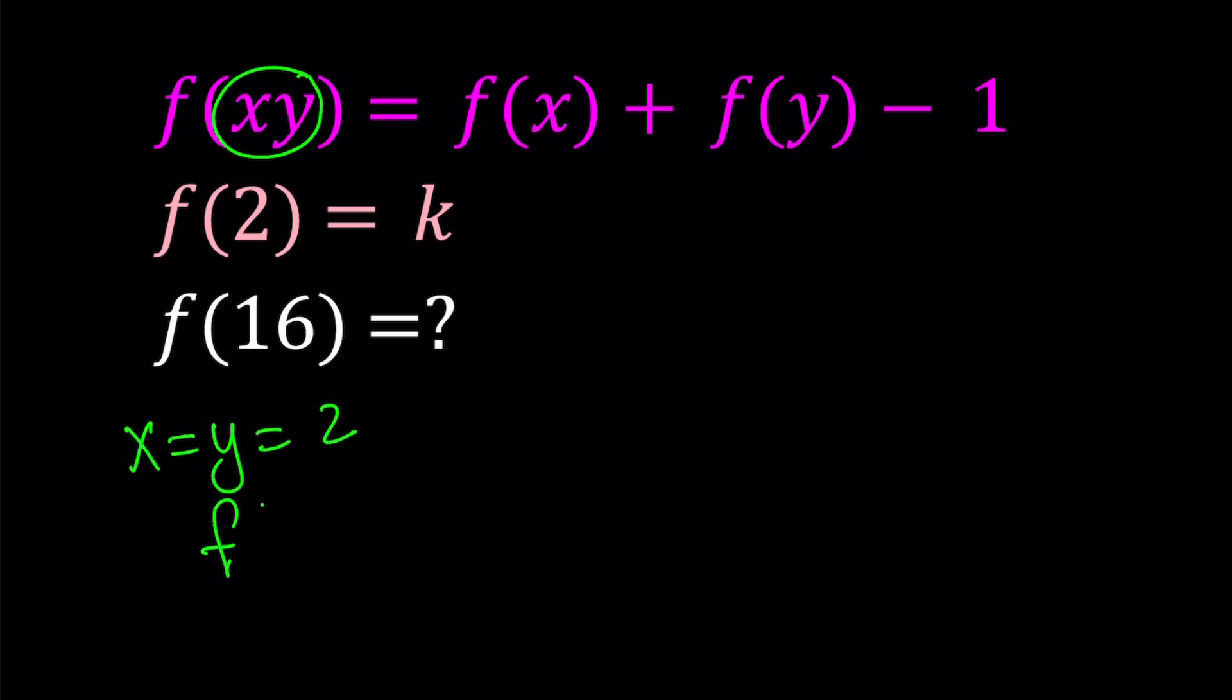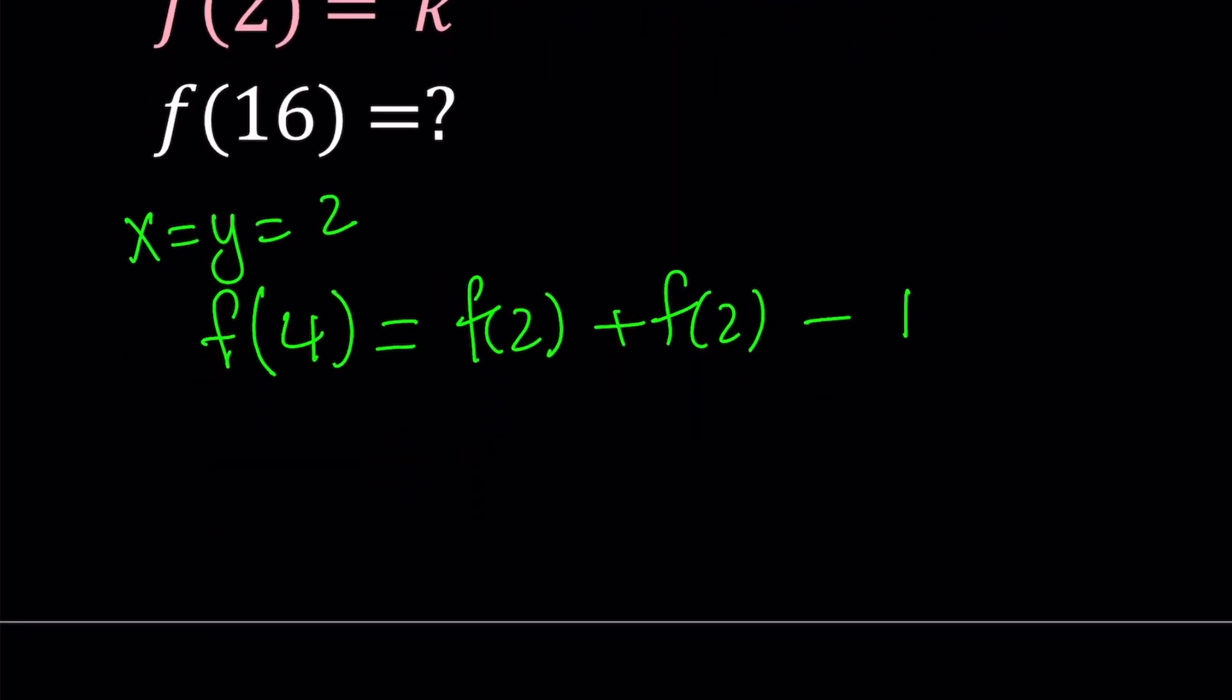That's going to give me f of 2 times 2, which is f of 4, equals f of 2 plus f of 2 minus 1. This is nice because it allows me to associate f of 2 with f of 4, which is 2 squared. Now, f of 2 is equal to k, so from here f of 4 is going to become 2k minus 1.